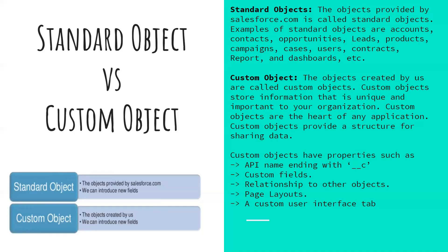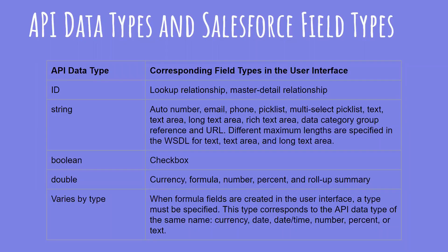Custom objects are created by the user. If a user creates any object in Salesforce, that is called a custom object. Custom objects store information that is unique and important to your organization. They are at the heart of your application because we always modify the standard process to utilize it for our own benefit. Custom objects have properties such as an API name always ending with double underscore C (__c), custom fields, relationships to other objects, page layouts, and custom user interface tabs.